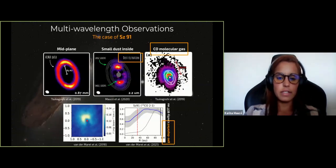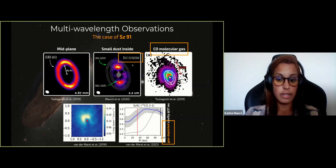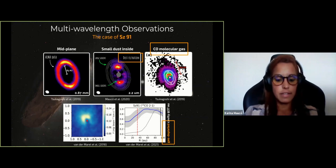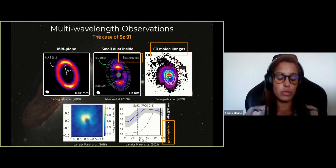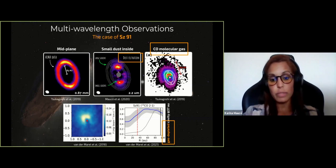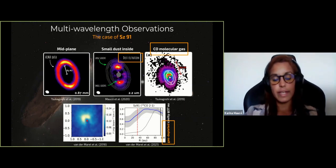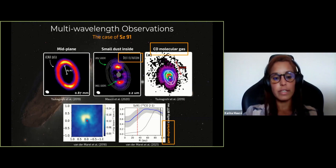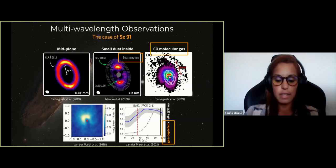Given all these characteristics — a well-confined sub-millimeter ring with a huge cavity, smaller grains inside the cavity indicating dust filtration, extended 12CO emission, and a gas-depleted cavity at 37 AU modeled by Van der Marel 2018 — all of these point to the presence of multiple planets in the system. This makes STRAS-91 a prime target to study dust trapping and grain growth.